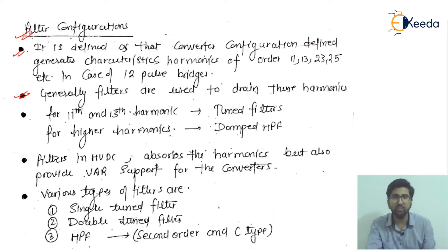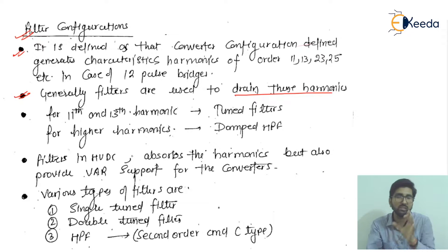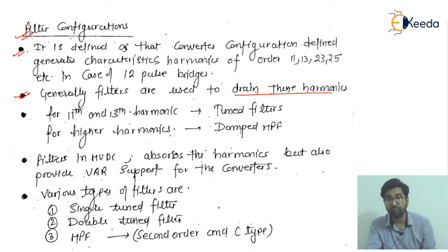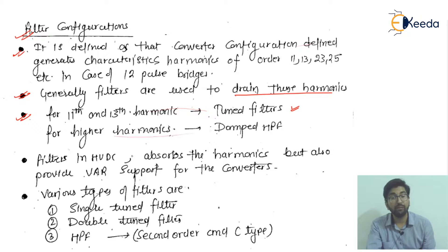Generally, filters are used to drain these harmonics. Filters are designed in such a way that they can drain or filter out these characteristic harmonics from the systems, or suppress them. For 11th and 13th harmonics, we generally use tuned filters, and for higher-order harmonics, it is called damped high-pass filters.